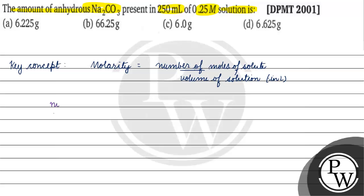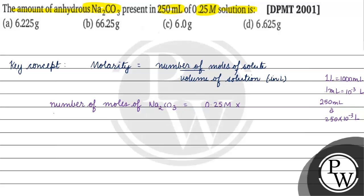So number of moles will be found first. Number of moles of Na2CO3 will be equal to molarity, which is 0.25 molar, into volume of solute in liters. How will we convert to liters? 1 liter equals 1000 milliliter, and 1 milliliter equals 10 to the power minus 3 liters. So 50 milliliter will be equal to 50 into 10 to the power minus 3 liters.